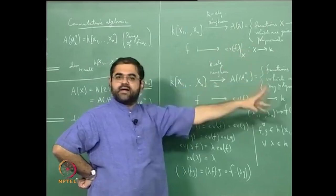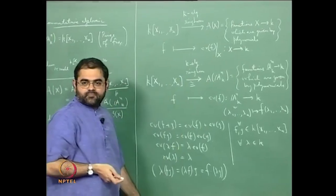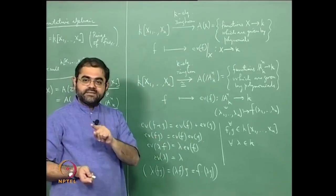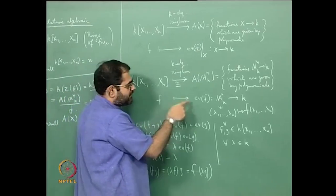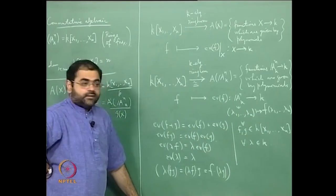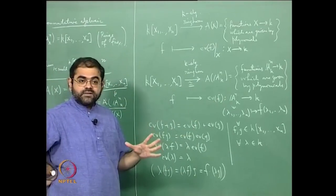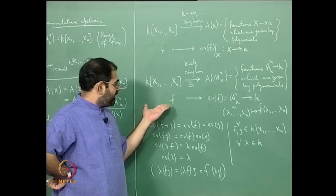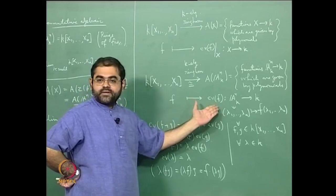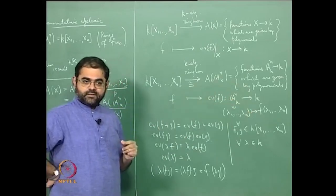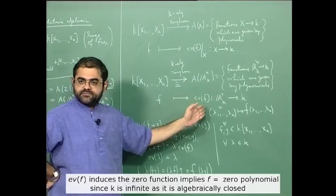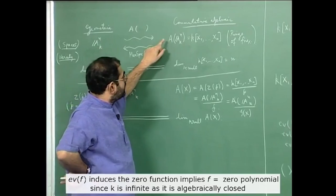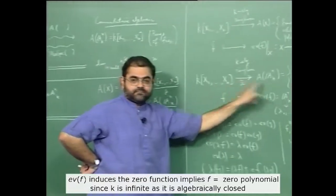Both maps are surjective — the only thing to worry about is injectivity. If a polynomial f is such that ev(f) is 0 for every point of A^n, then f has to be the zero polynomial, because if it is not the zero polynomial you should be able to find some point where evaluating it gives a nonzero element of k. That tells you the map is injective, and since it is already surjective, it is an isomorphism. This justifies the definition that the ring of functions on A^n is the polynomial ring.